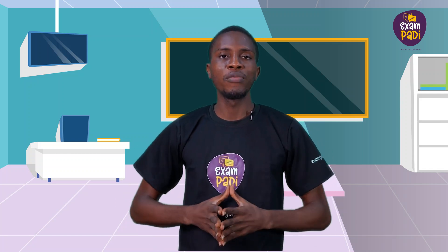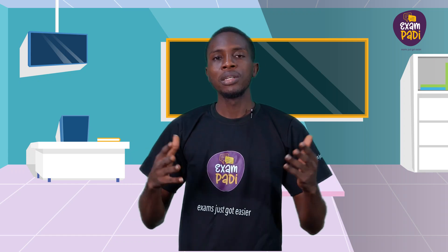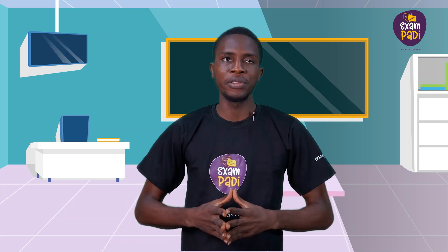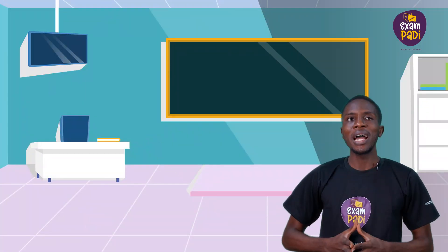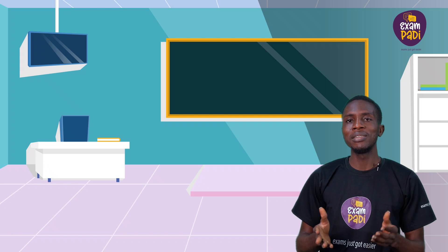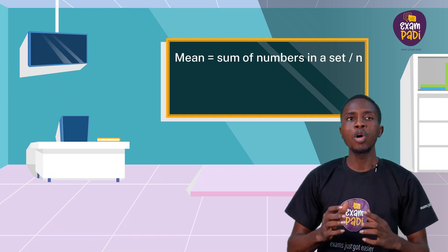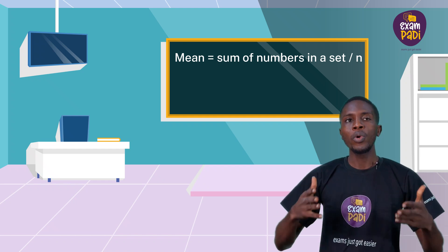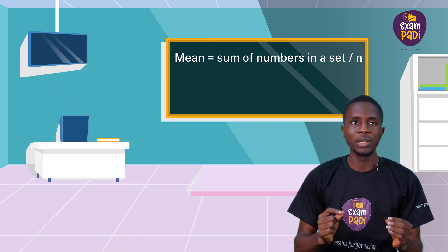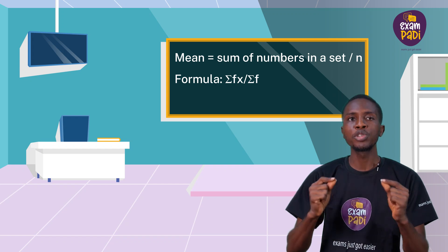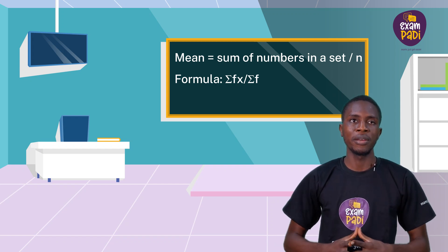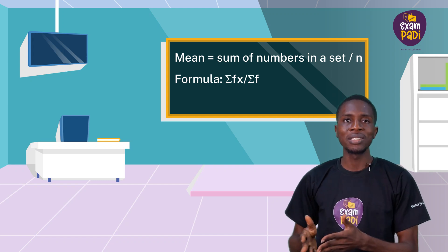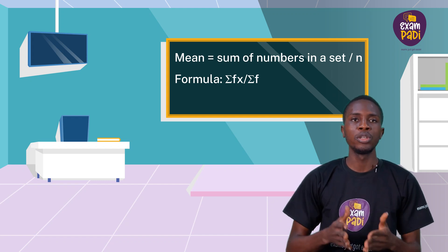How do we determine the mean of a given set of data? The mean, sometimes called the arithmetic mean, is the most common average. If there are n numbers in a set, then mean equals sum of numbers in a set divided by n. When the set of data is tabulated, we use the formula summation fx over summation f — that is, the summation of the frequency and the numbers divided by the summation of the frequency.